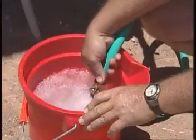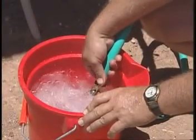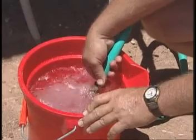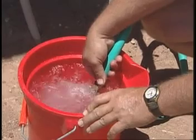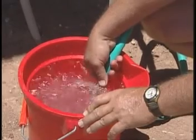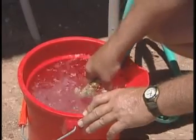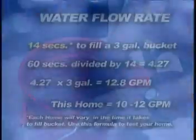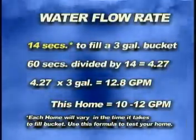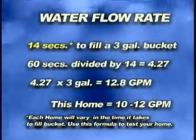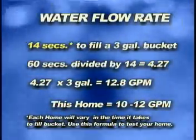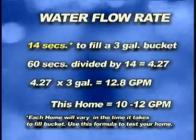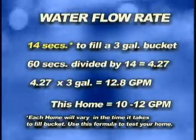With this flow rate you will be able to accurately design your irrigation system. Flow rates below this range will require that fewer heads be zoned together, and higher pressure may require a pressure reducer after the water source. Using the bucket fill method, we have determined that our water flow rate is 12.8 gallons per minute.